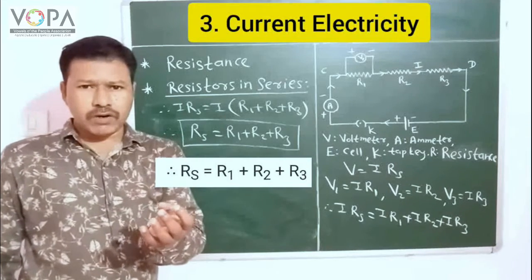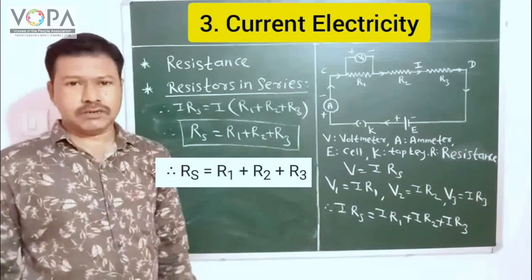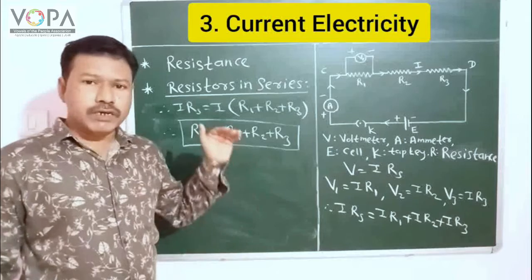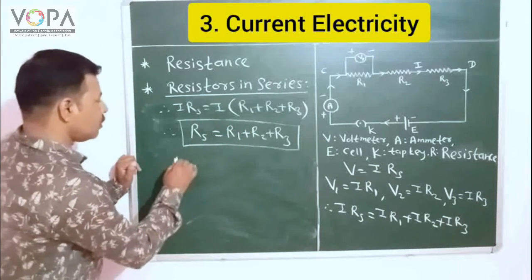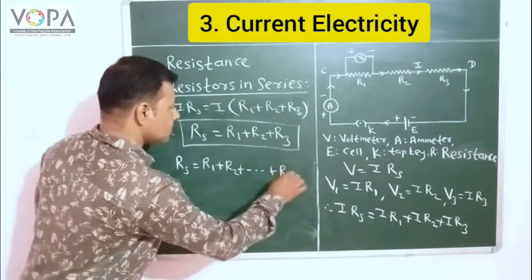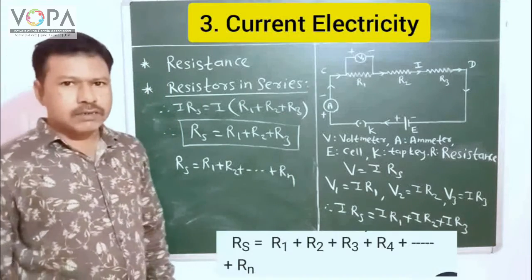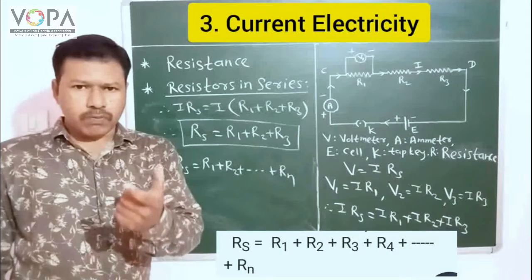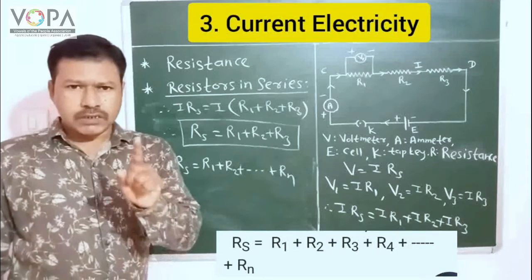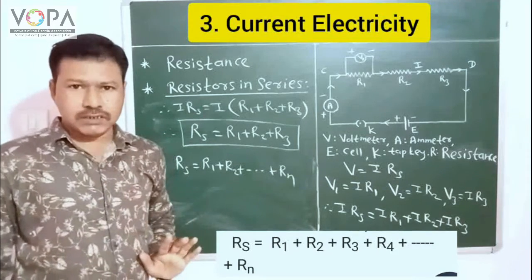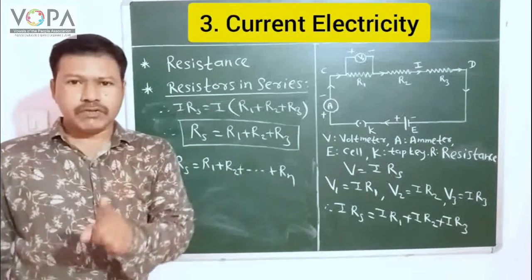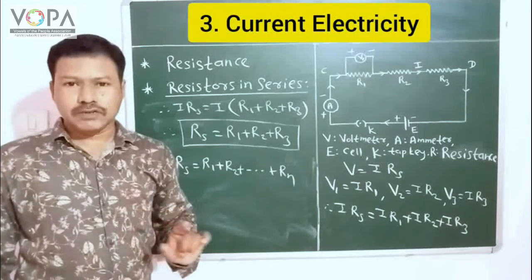This is the required expression for the effective resistance when the three resistors R1, R2, and R3 are connected in series. If N resistors are connected in series, the effective resistance equals R1 + R2 + R3 + ... That is, the effective resistance of resistors connected in series is equal to the sum of their individual resistances. In this way we have derived the expression for effective resistance when resistors are connected in this combination.